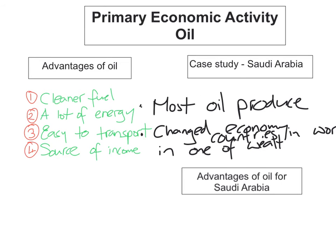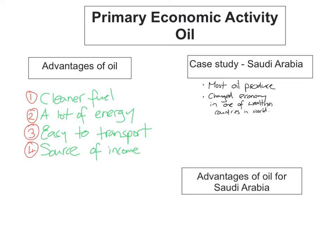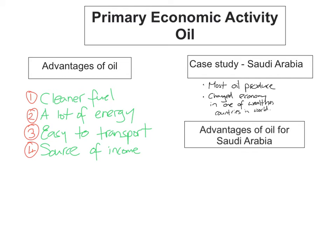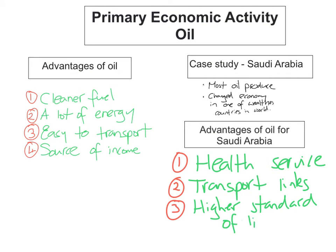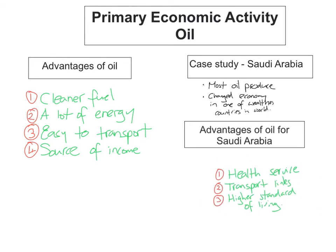With all the oil production in Saudi Arabia, there have been many advantages for its economy. First, it has transformed the economy into one of the wealthiest countries in the world. It has also helped the country develop its health service, which has increased dramatically because of the money from oil production. Second, transport links — roads, rail, air, airports, and ports — have all improved because of the wealth and better infrastructure. And there is a much higher standard of living.